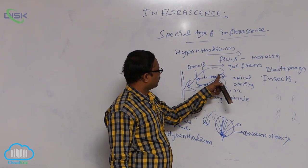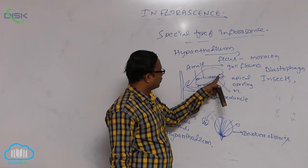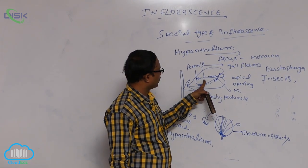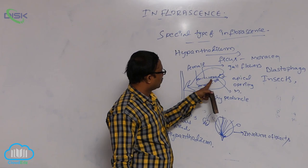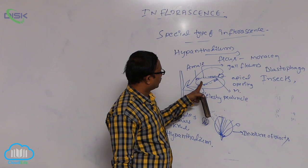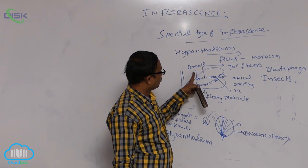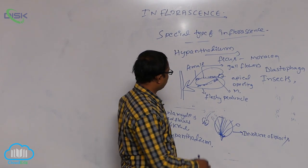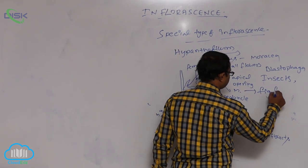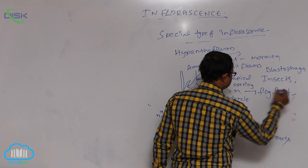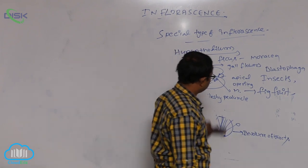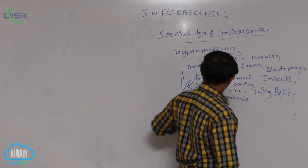The Blastophaga insect enters the inflorescence through the apical opening, lays eggs inside the gall flowers. When it enters through the apical opening into the inflorescence, cross-pollination occurs by the female flowers. After fertilization, these female flowers are converted into fruit — this complete fruit is known as fig fruit. That is known as hypanthodium inflorescence. Totally, inflorescence is completed.